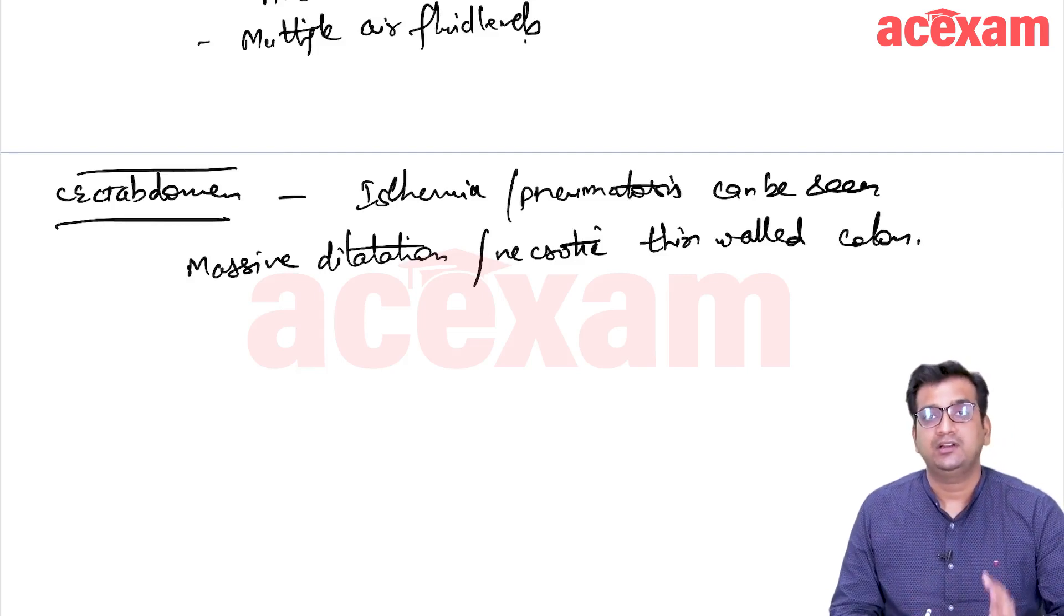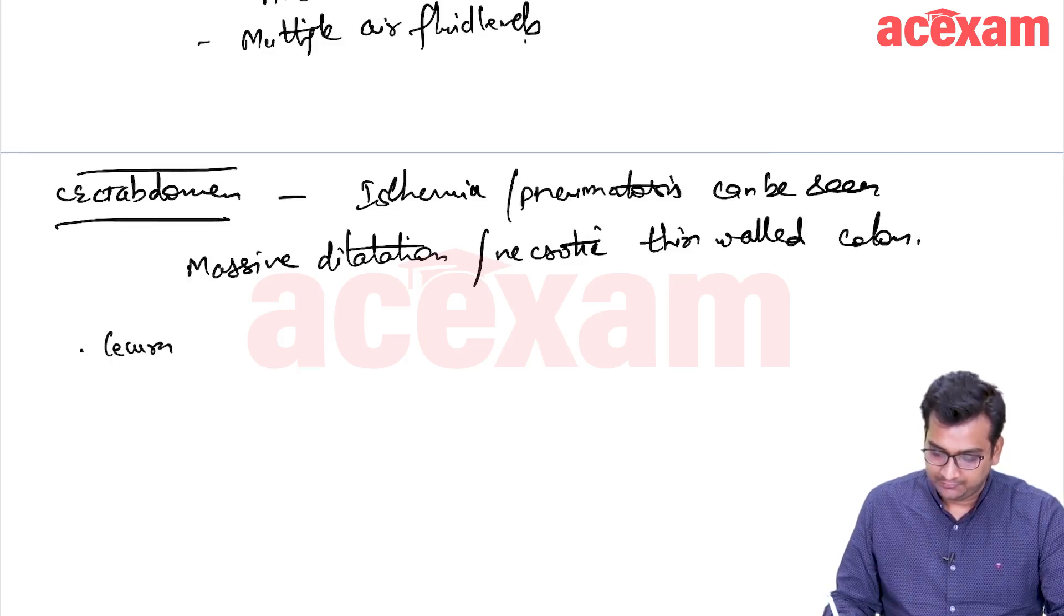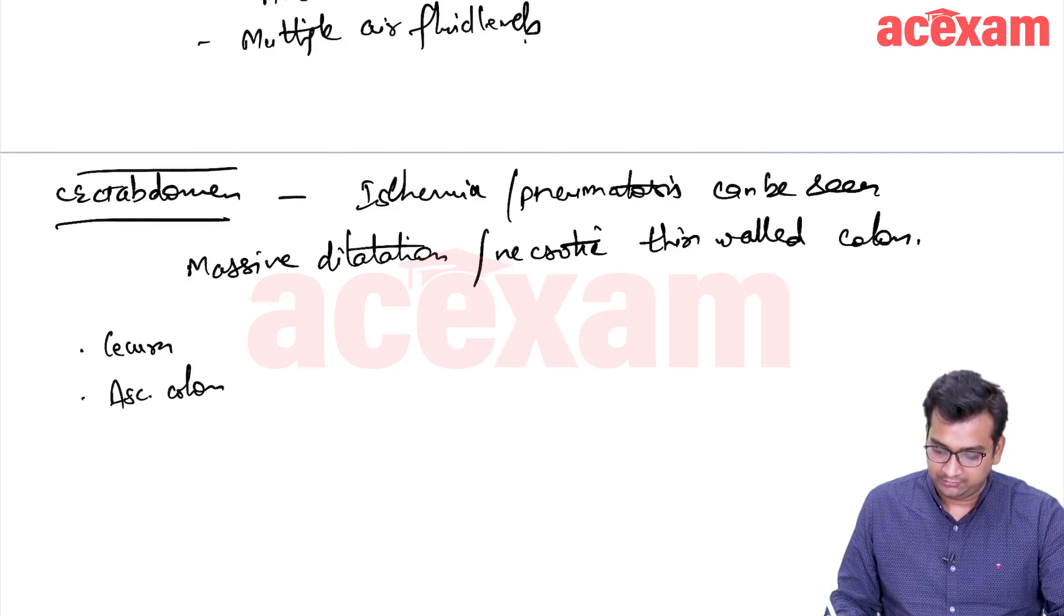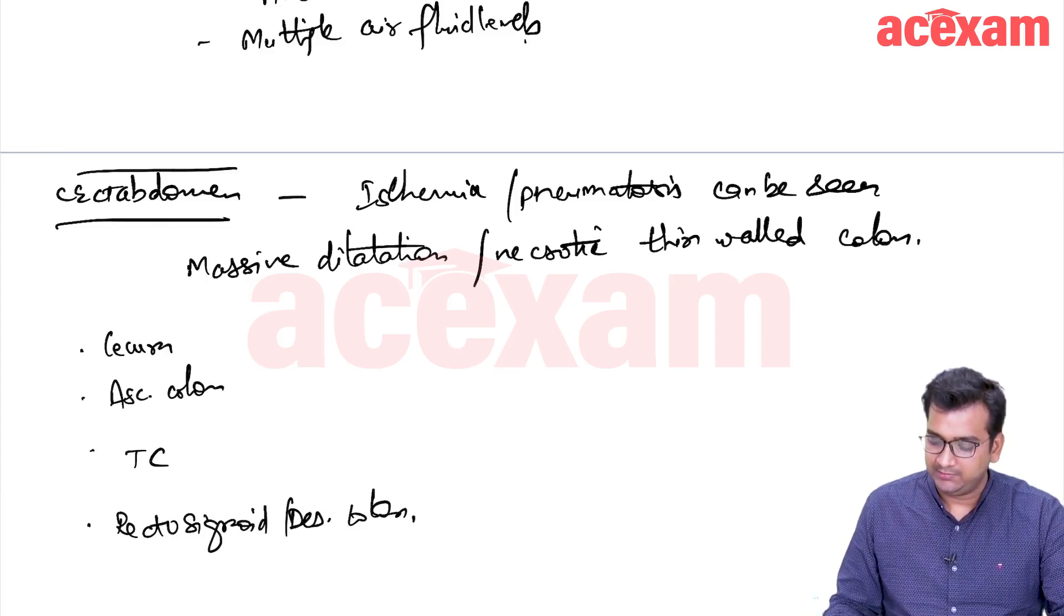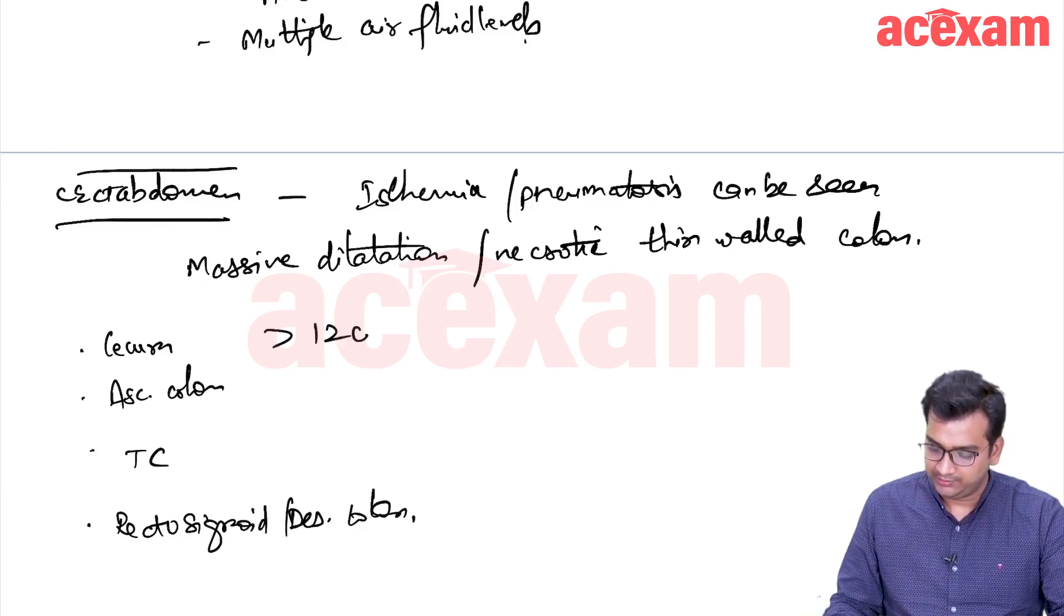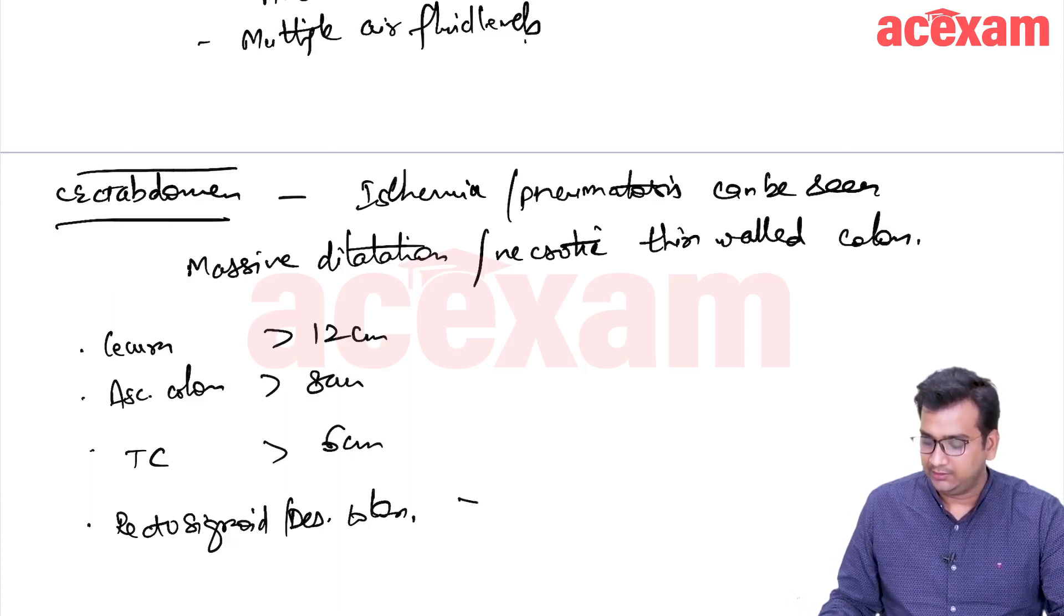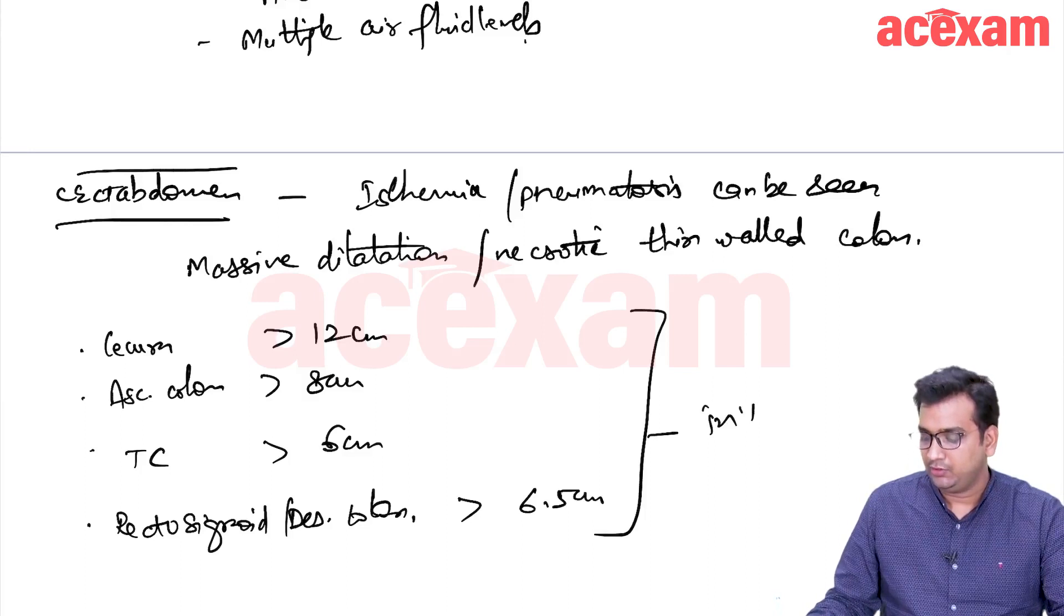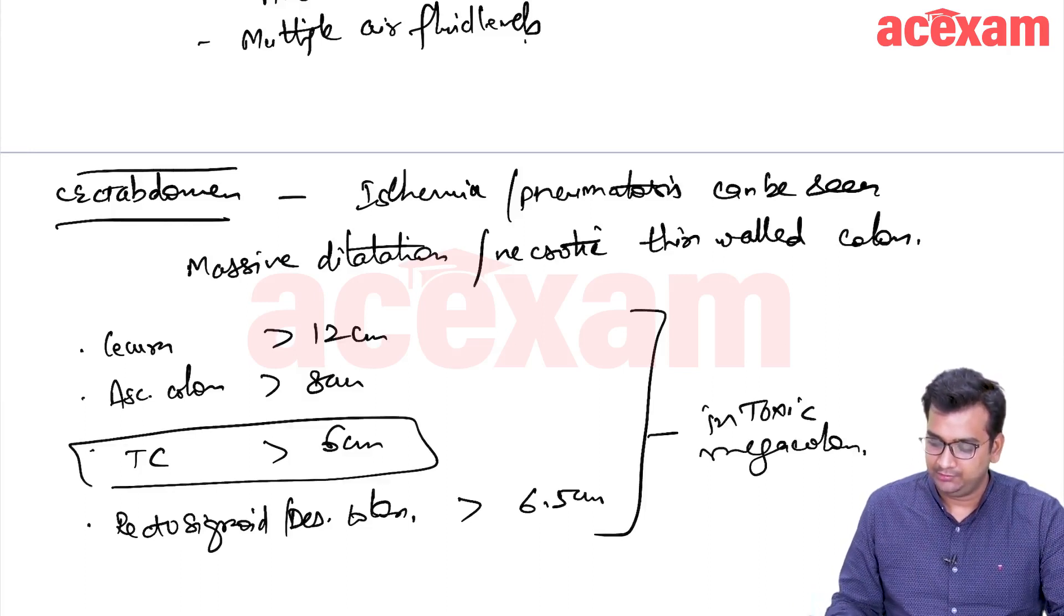And what is the diameter of transverse colon? It should be more than 6 cm. And what should be the diameter of cecum? What should be the diameter of ascending colon, transverse colon, rectosigmoid or descending colon? These other diameters are also being asked. The cecum should be more than 12 cm, ascending colon should be more than 8 cm, transverse colon more than 6 cm, and rectosigmoid or descending colon should be more than 6.5 cm in toxic megacolon. This is very important to remember.